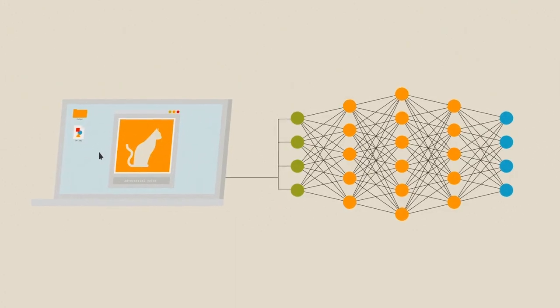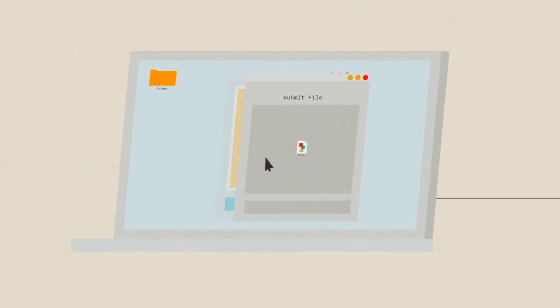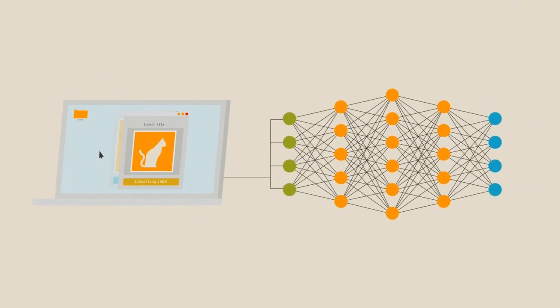Common approaches for model hardening include filtering the inputs or changing the internal architecture of the deep neural network such that the adversarial samples do not propagate through the internal hidden layers.